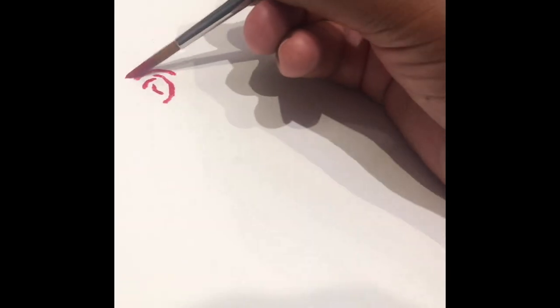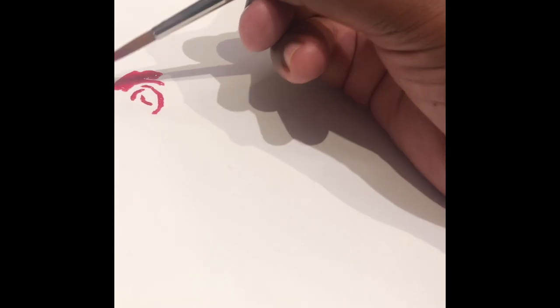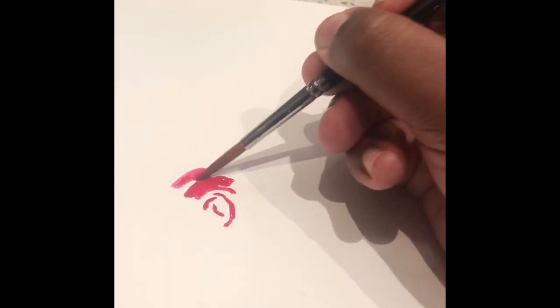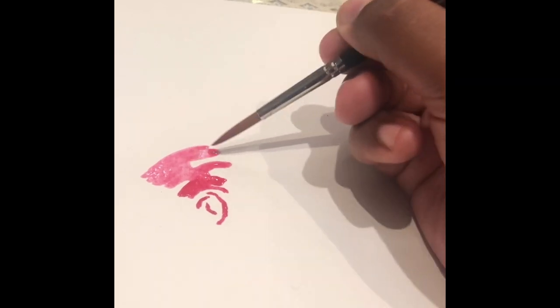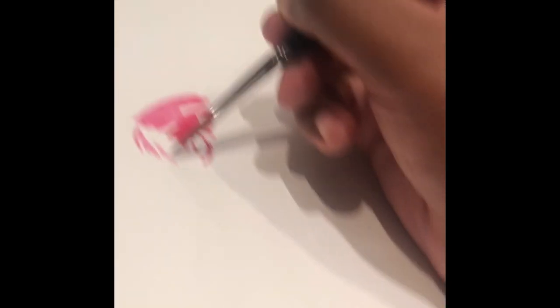Now you want to continue doing this, going round and round. And then what you want to do, you want to get more water to make the colors more lighter. Now as I'm going for a loose watercolor style, I want this petal to look more expressive. I don't want it to look realistic, but I want it to look more expressive and give it that expressive feel to my painting.